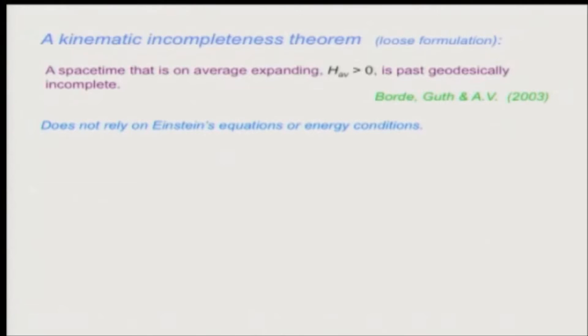So this kinematic incompleteness theorem that I proved with Arvind Borda and Alan Guth several years ago, very loosely stated, says the following: that a spacetime that is on average expanding, that is the average Hubble rate is positive, is past geodesically incomplete. I will give a more accurate statement in a moment.